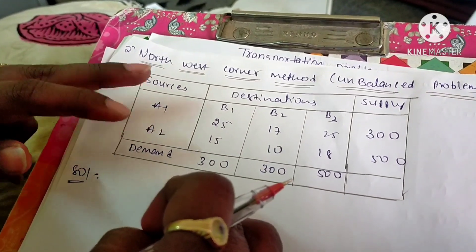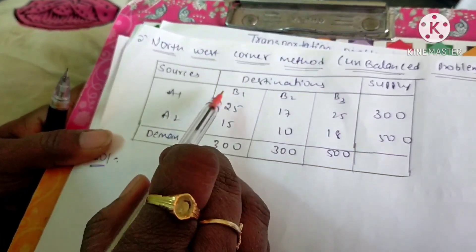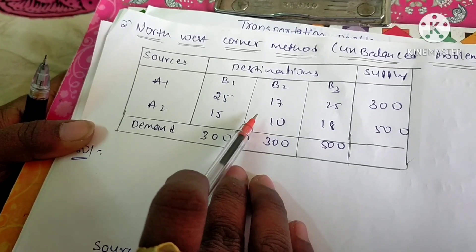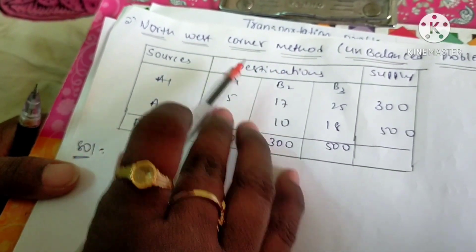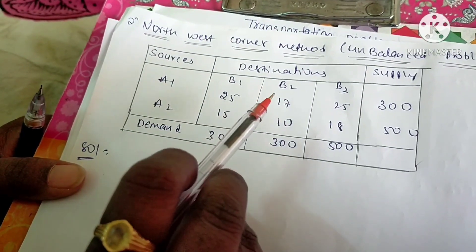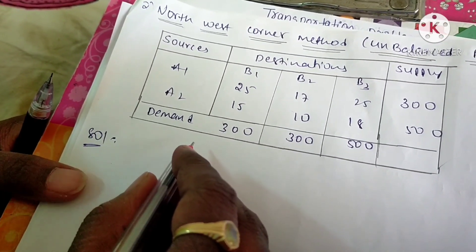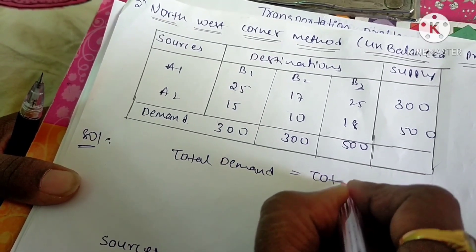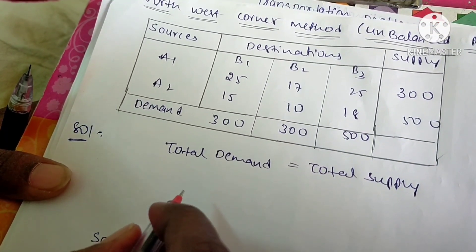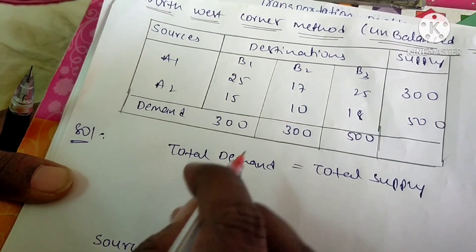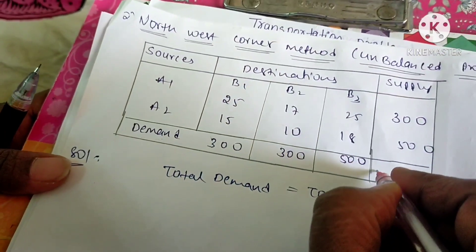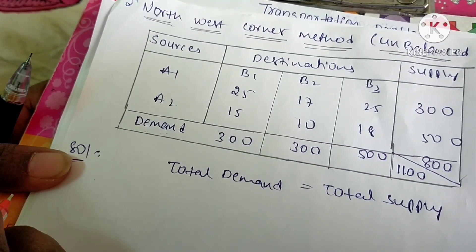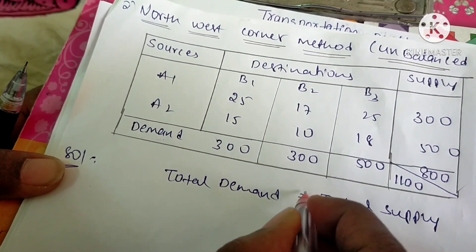Before applying the northwest corner method, we have to check whether the given problem is balanced or unbalanced. We can only apply the northwest corner method to a balanced transportation problem. A problem is balanced when total demand equals total supply. Checking here, the total demand is 1100 and the total supply is 800.